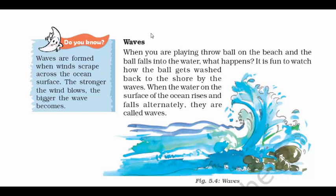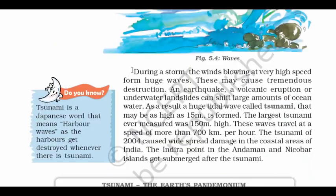Waves: when the water on the surface of the ocean rises and falls alternately, they are called waves. During a storm, winds blowing at very high speed form huge waves and they may cause tremendous destruction. Large amounts of ocean water can also be shifted by an earthquake, a volcanic eruption or an underwater landslide, and the result is a huge tidal wave called a tsunami.